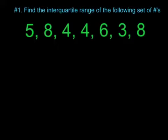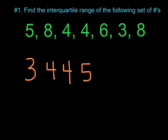On your notes, it's broken it down into steps for you. Step one says put the data in numerical order from least to greatest. So if you do this, you should get 3, 4, 4, 5, 6, 8, 8.